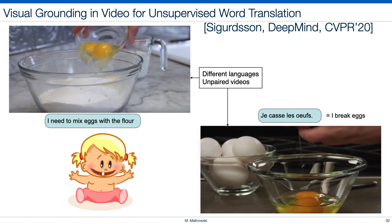Imagine now that you are a small child born in a bilingual family. One of your parents speaks English, another French. Sometimes you cook together with one parent, and another time with the other parent. Even if you don't see the same event twice, and sentences might also be different — for instance, one day you hear 'I need to mix eggs with flour', and another day you hear the French equivalent meaning 'I break eggs'. If this situation is happening more often, you can understand that certain words are referring to the same object. So this is our setting: we have unpaired corpora of two languages, with also unpaired videos, and the scientific question is how to build a translation system between two languages.